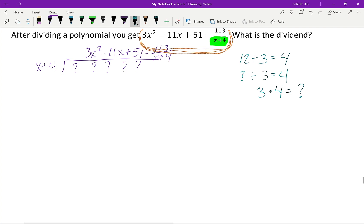I'm going to use that same logic to solve this problem. If I don't know what's being divided, I'll multiply the answer by the divisor to get the dividend. So I'm going to take my divisor, x + 4, and multiply it by 3x² - 11x + 51.